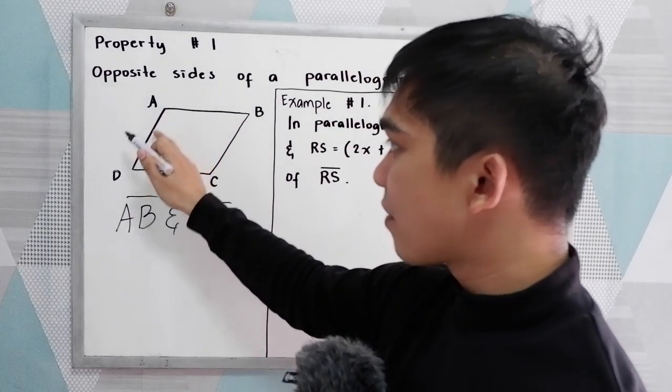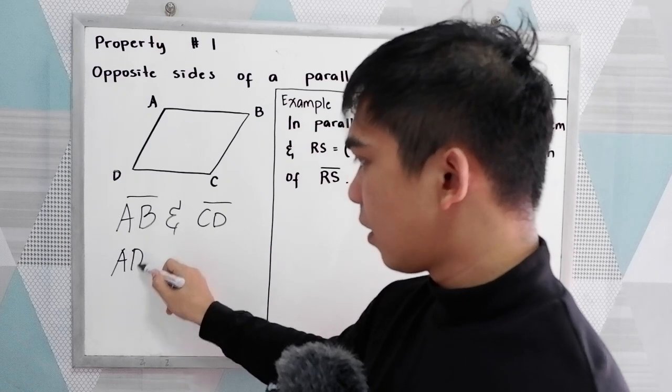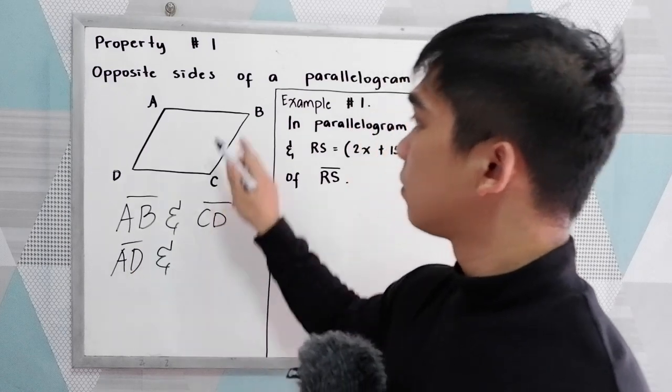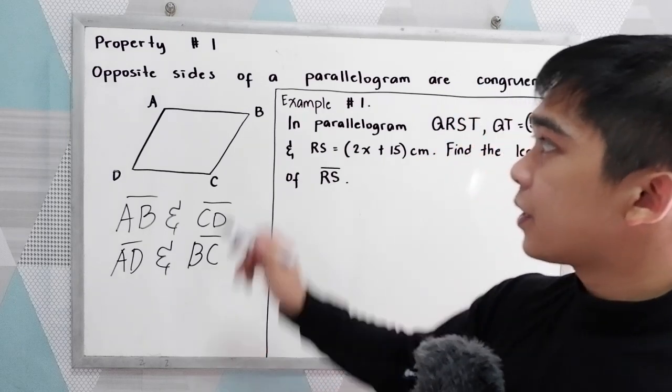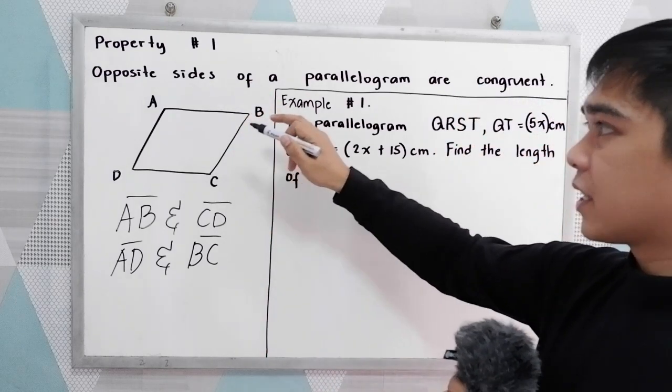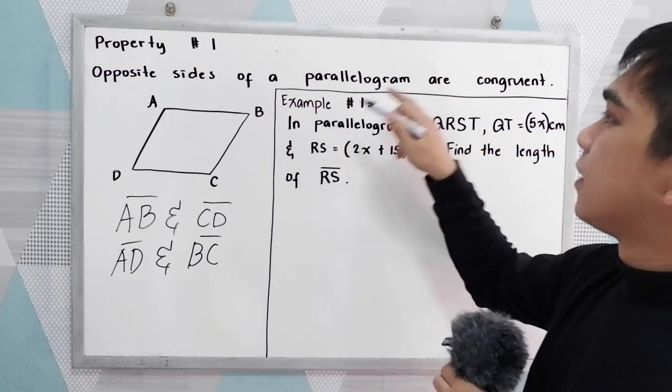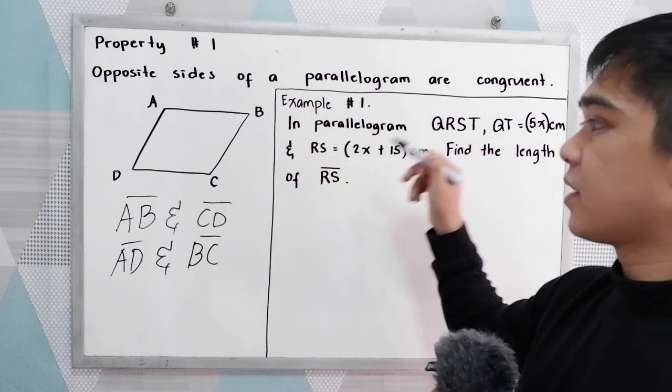We also have AD and BC. Now following our property number one, they are congruent. So opposite sides are congruent.